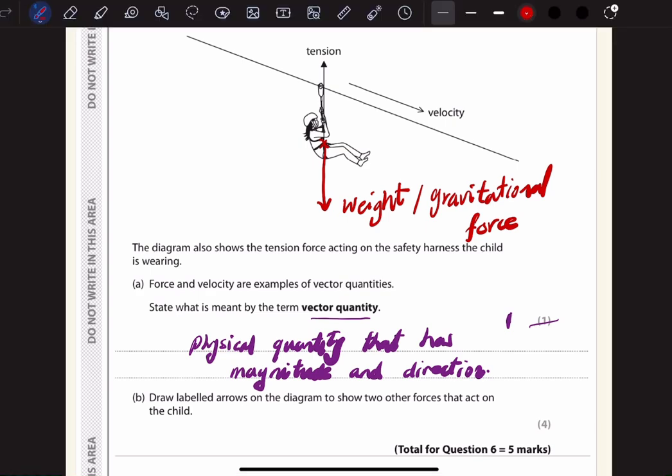There is another force which opposes the motion of the child while moving through the air. It is air resistance, and this air resistance always acts in the opposite direction to the child's velocity. So we have to draw the arrow pointing opposite to the child or the direction of the child's motion and label this arrow as air resistance.